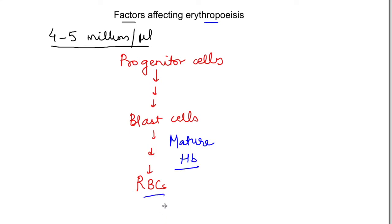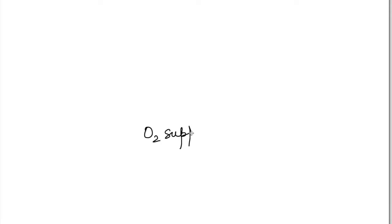So let's see how these factors act. The logic is that if you have to maintain the RBC number, what should the body sense? Whether the RBC number is adequate or not? Whether the oxygen supply is being done properly or not?